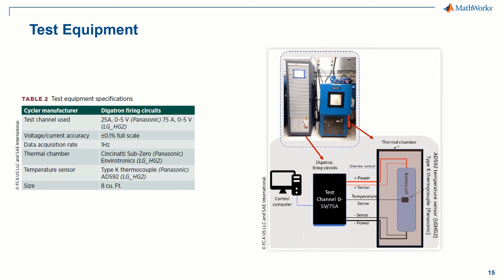This ensures the datasets are an accurate set of reference data. The cells are placed in a thermal chamber, and a range of drive cycle and characterization tests are performed at temperatures of negative 10, 0, 10, and 25 degrees C.